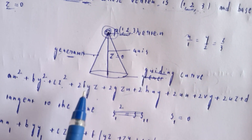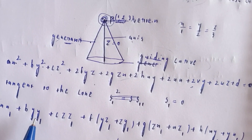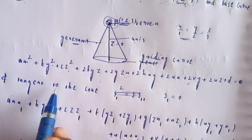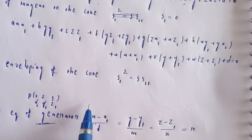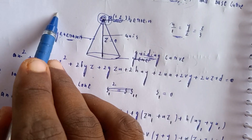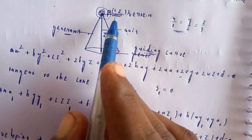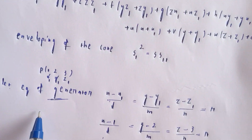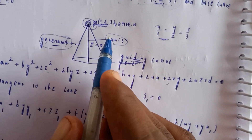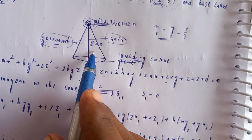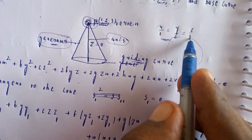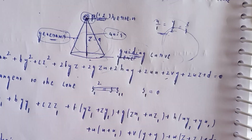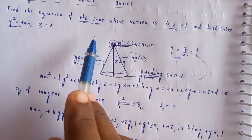You can try one problem yourself. For the next problem, you can see the cone with axis z = 0, y = 0. The generator has its own equation form. The key parts are: guiding curve, vertex, and axis.